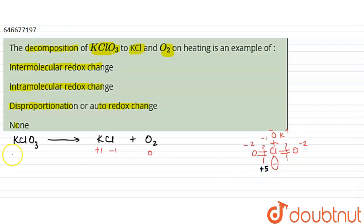So as you can see the oxidation state of chlorine in this KClO3 is plus 5 and the oxidation state is minus 2.